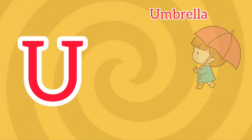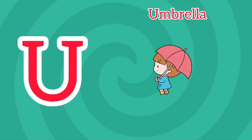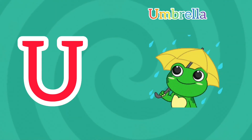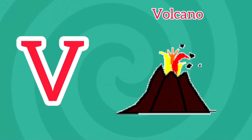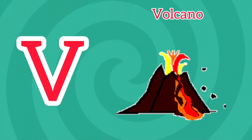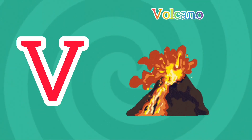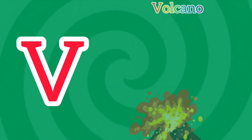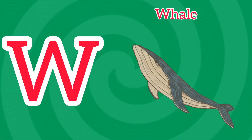U is for Umbrella. U, U, Umbrella. U is for Umbrella. U, U. V is for Volcano. V, V, Volcano. V is for Volcano. V, V.